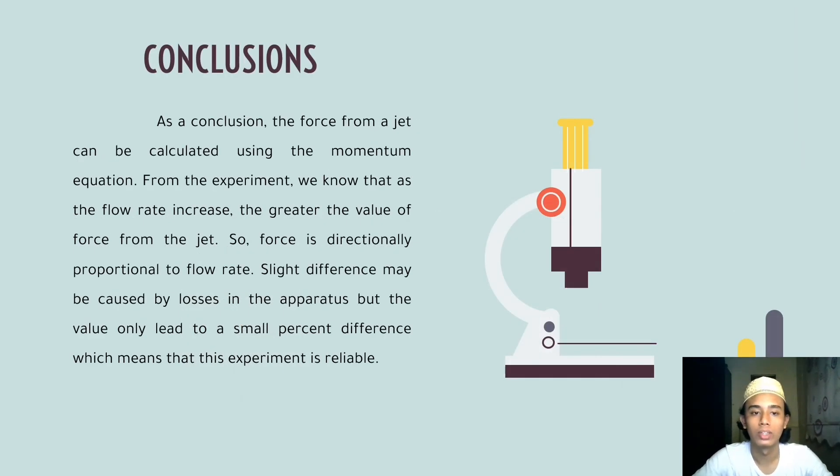For the conclusion, the force from a jet can be calculated using the momentum equation. From the experiment, we know that as the flow rate increases, the greater the value of force from the jet. So force is directly proportional to flow rate. Slight difference may be caused by losses in apparatus, but the value only leads to a very small percent difference, which means that this experiment is reliable.